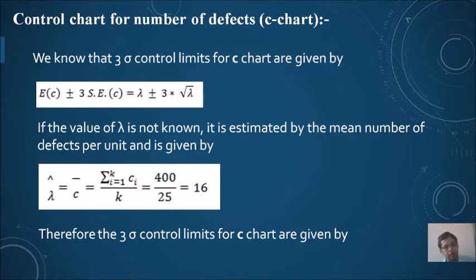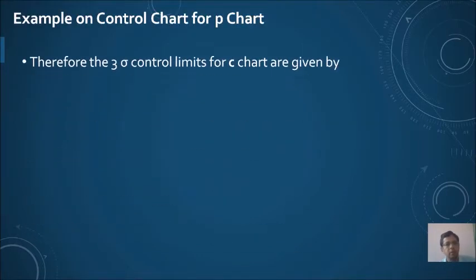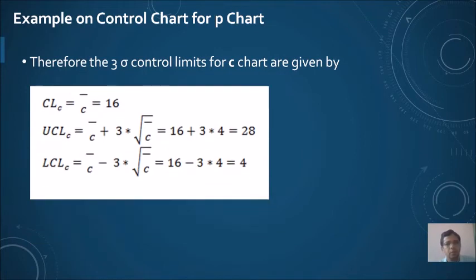Once we have this estimated value of lambda, we can use this value to obtain the three sigma control limits. The three sigma control limits for c chart are given by the central line, which is c bar equal to 16.